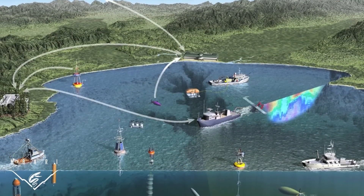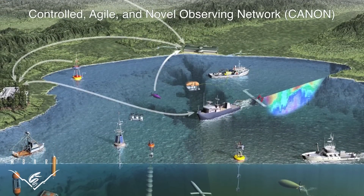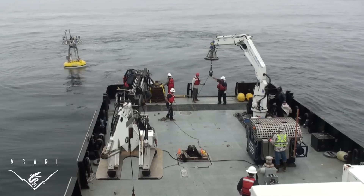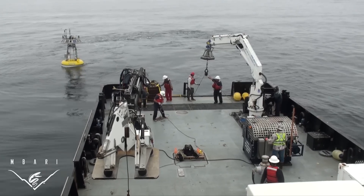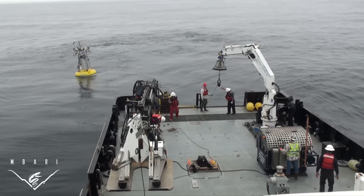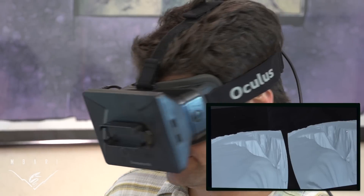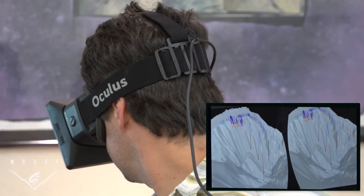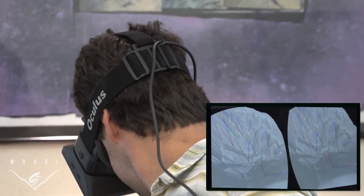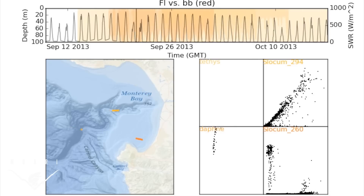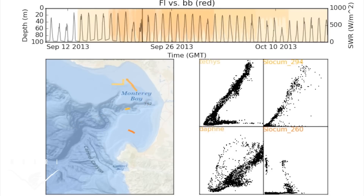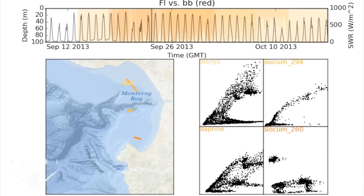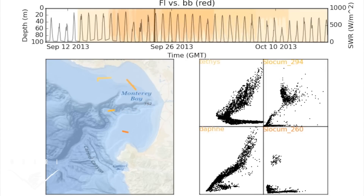We use STOAKS for several of our projects. Canon is one of them, and the Monterey Bay Time Series is another one. It is completely different from anything else that we have developed here at MBARI. It allows us to merge a wide variety of data from many different platforms and look at them together.